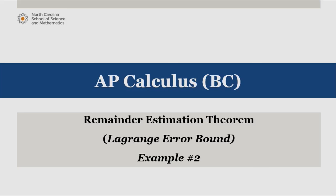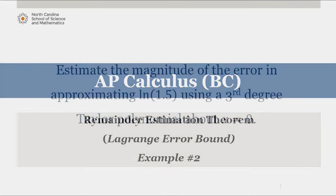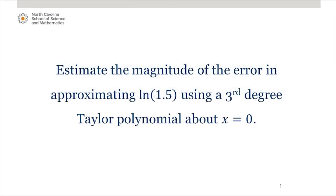In this video, we're going to apply the remainder estimation theorem, or Lagrange error bound, to estimate the magnitude of the error in approximating natural log of 1.5 using a third degree Taylor polynomial about x equals 0.